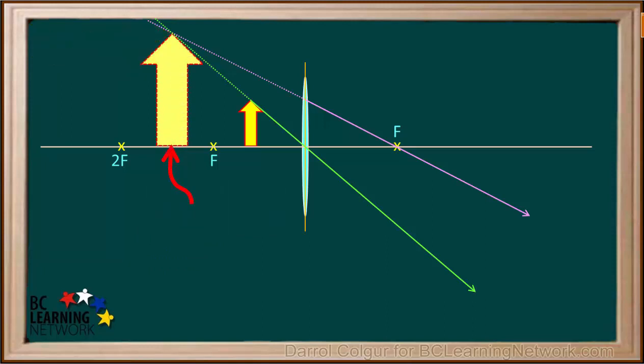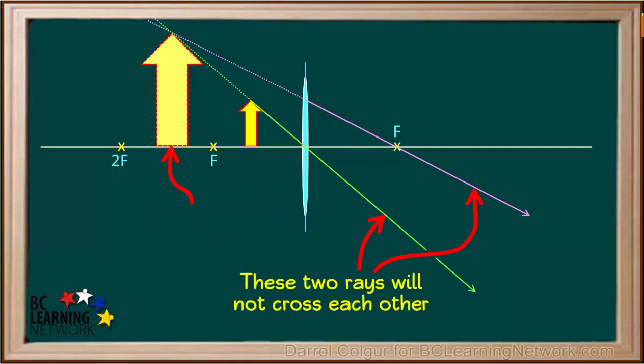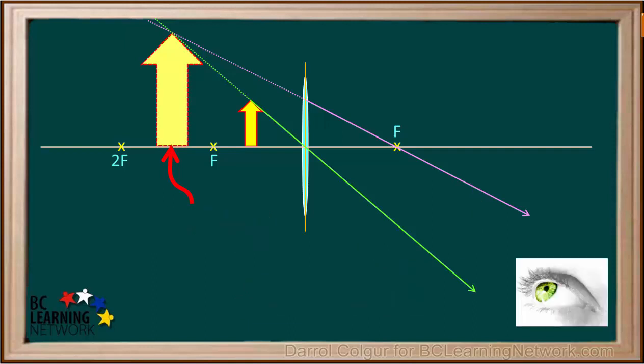Because the actual rays, shown by the solid purple and green arrows, do not cross, this is not a real image. But it does appear to an observer, so it's called a virtual image. We show it here with a dotted outline.